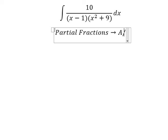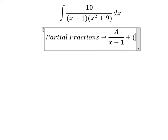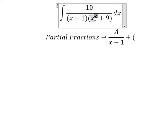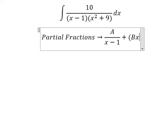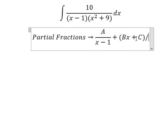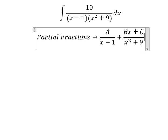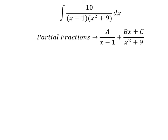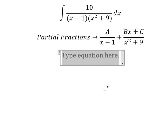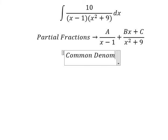I will put A over (s minus 1). Because we have s squared, we also need to put (Bs plus C) over (s squared plus 9). Next, I need to find the common denominator.